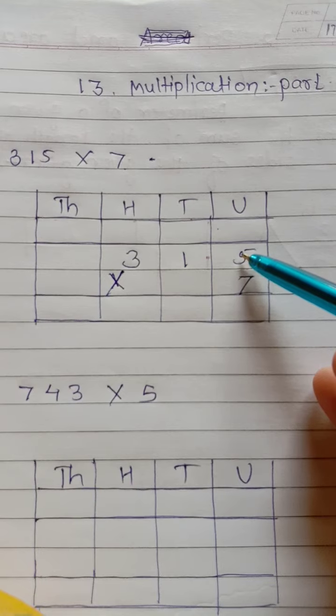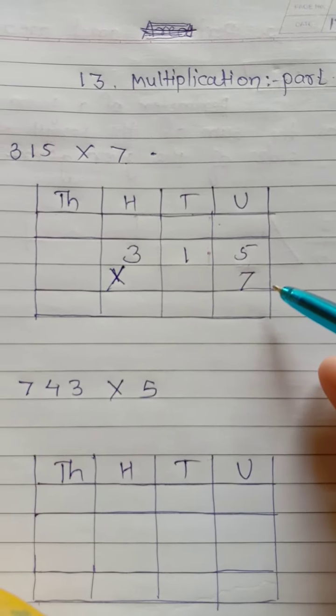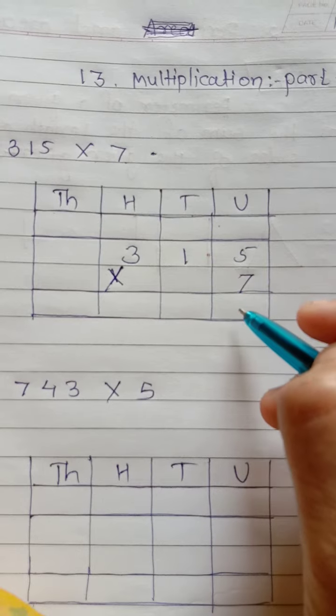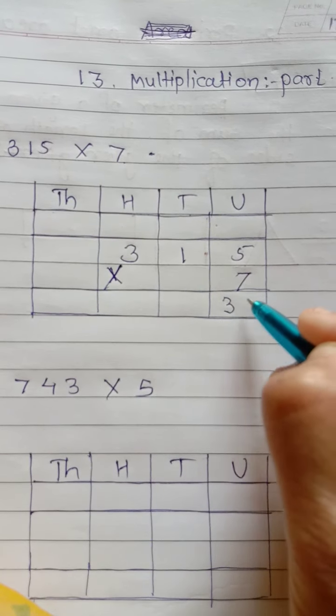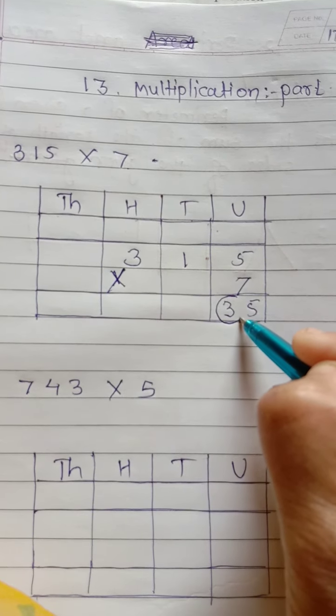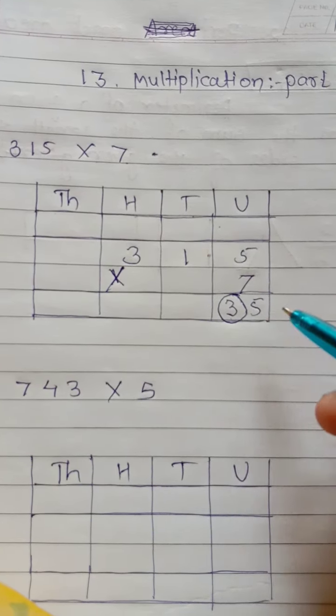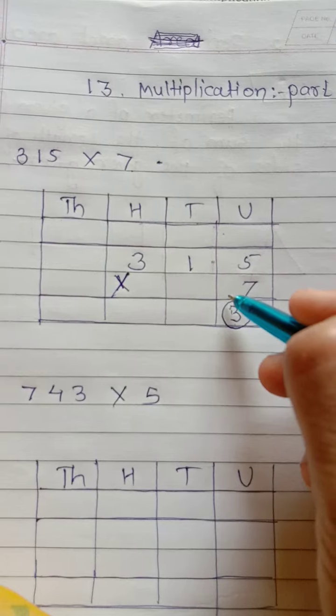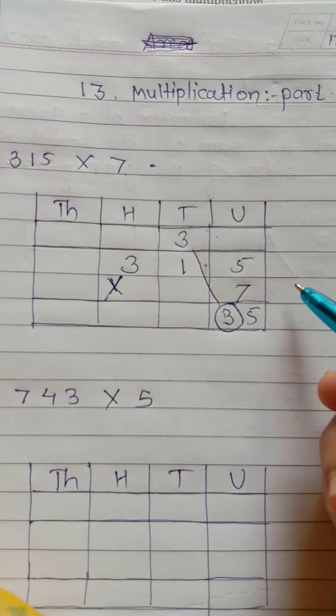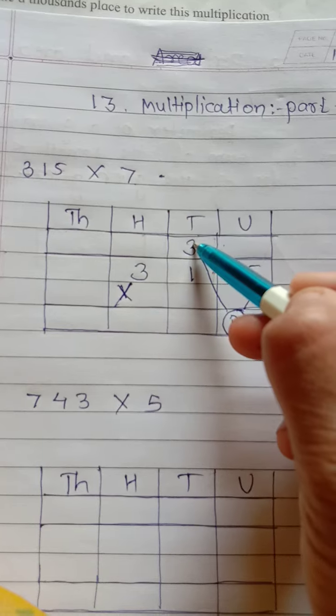First, we multiply 5 units by 7 units. 5 units by 7 units. The product is 35. 7 fives are 35. Your answer is 35. For that, this is 35. Your answer is 35. You must write down this. 35 units. That is, 3 tens, 5 units. So, write 3 tens here. 3 tens in the carried over 10 plus. Write this 3 tens in the carried over 10 plus.